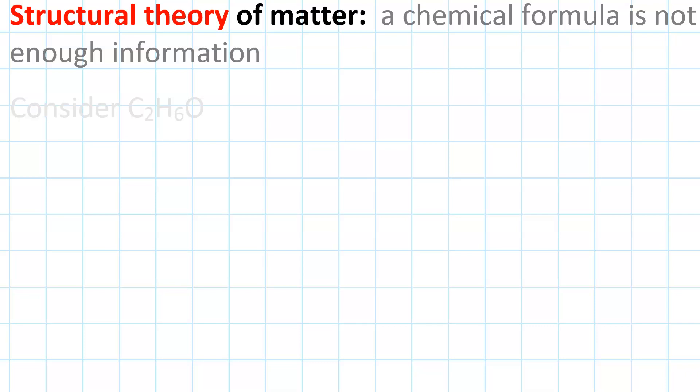One important idea that organic chemistry is predicated upon is the Structural Theory of Matter. This states that a chemical formula alone doesn't give you enough information. Consider the compound C2H6O.